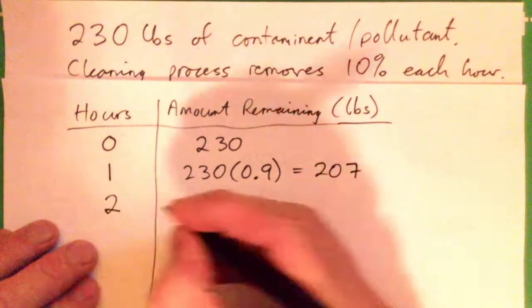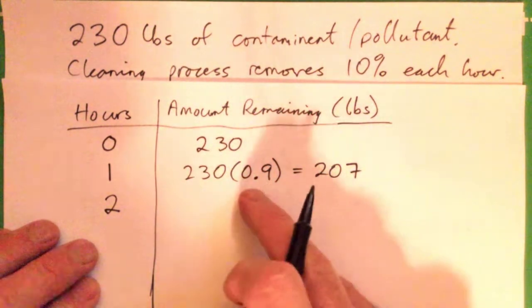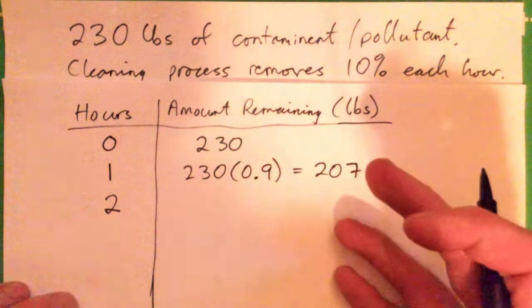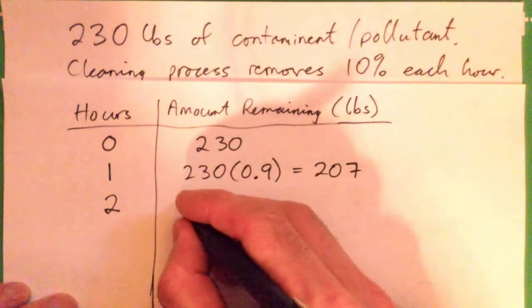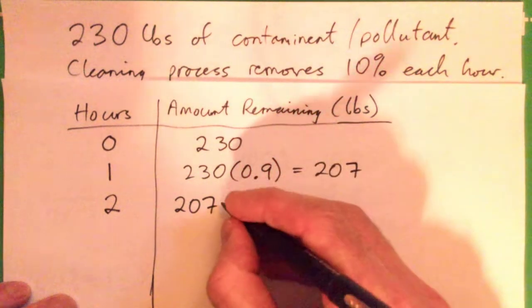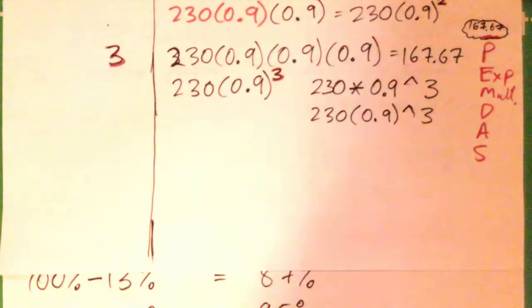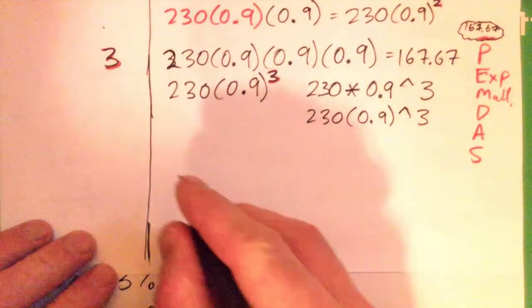So we can go 230 times 0.9 to get 207 remaining after one hour. Now, after two hours, you can take the 207 times 0.9 to get 186.3. And that's the same thing. Now we have our formula.